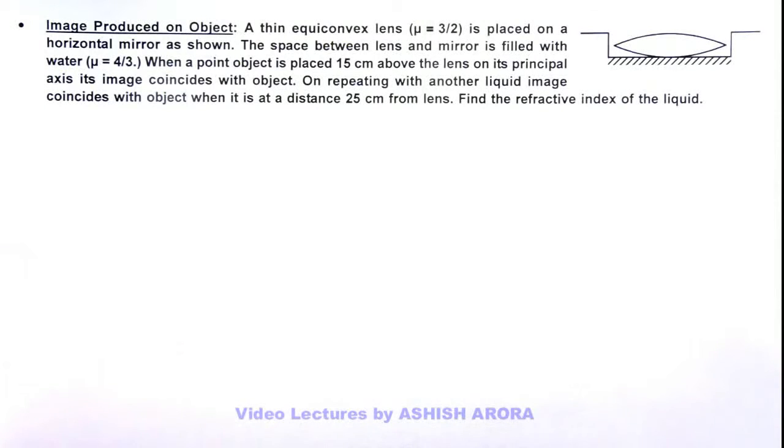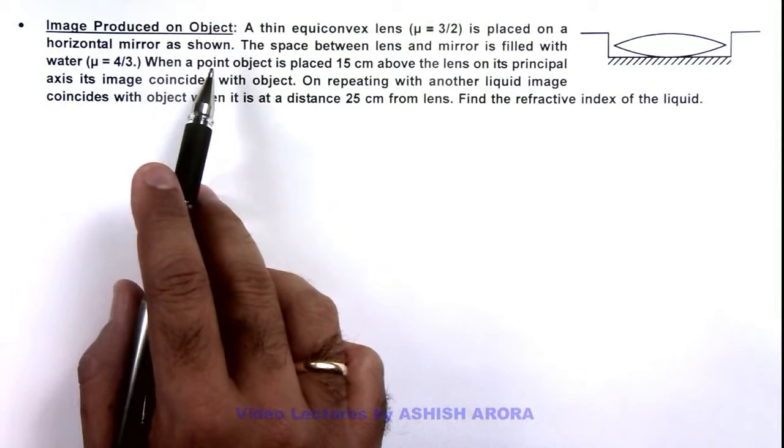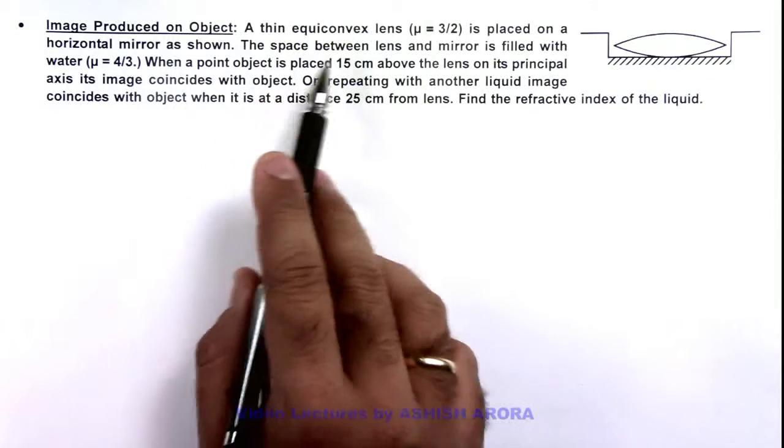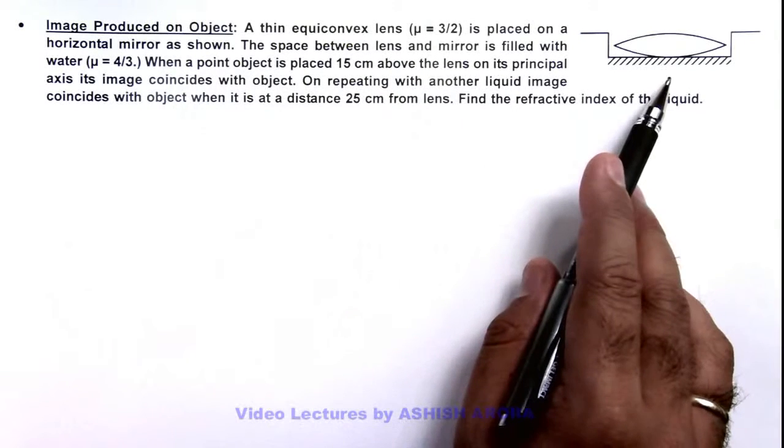In this illustration we'll discuss a situation when image is produced on an object. Here we are given that a thin equiconvex lens with refractive index 3/2 is placed on a horizontal mirror as we can see here.